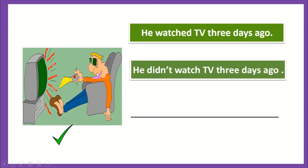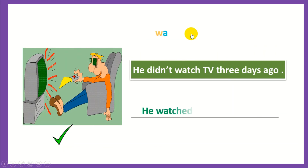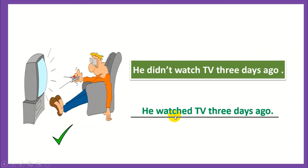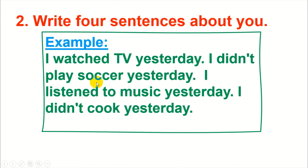Look at the picture: 'He watched TV three days ago' or 'He didn't watch TV three days ago.' Well done, that's the correct answer. Now I have a task for you — write four sentences about yourself. For example: I watched TV yesterday. I didn't play soccer yesterday. I listened to music last night. I didn't cook yesterday. That's your mission — when you finish, you can tell me later!